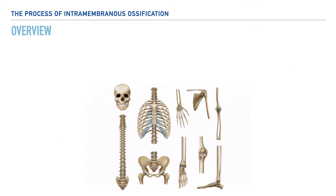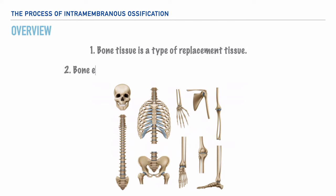The first thing I'd like to share is that bone is a type of replacement tissue. In other words, bone tissue develops to replace an existing tissue, and that existing tissue is known as cartilage. So we can think about cartilage as a blueprint for the building of bone tissue.